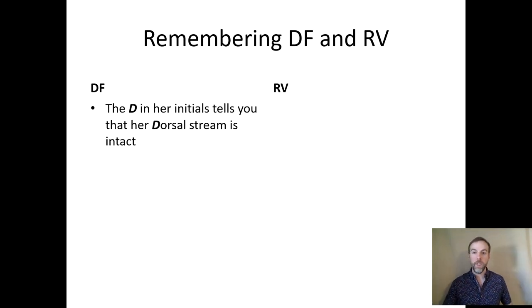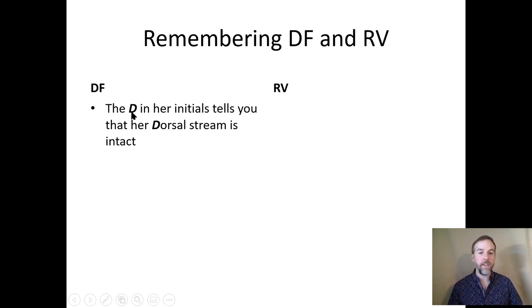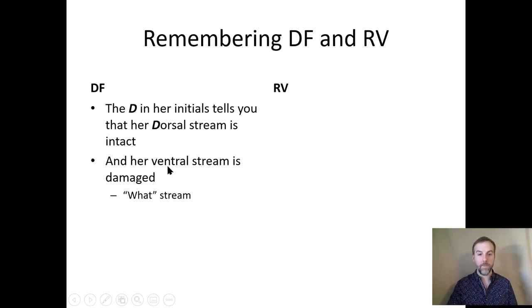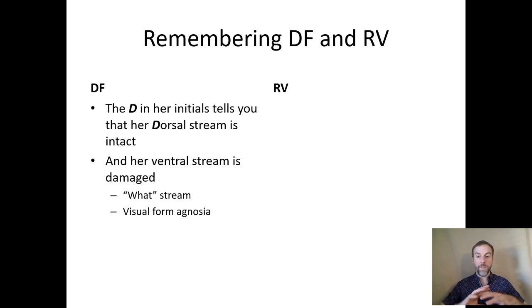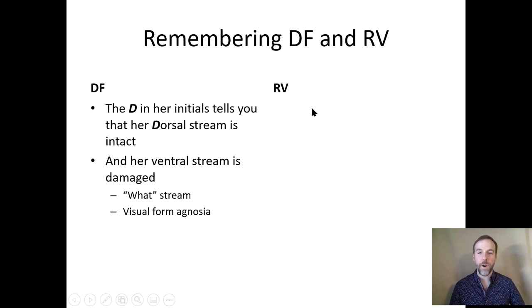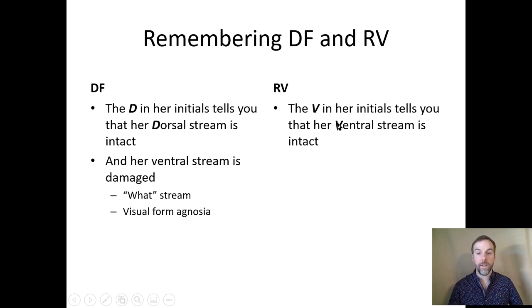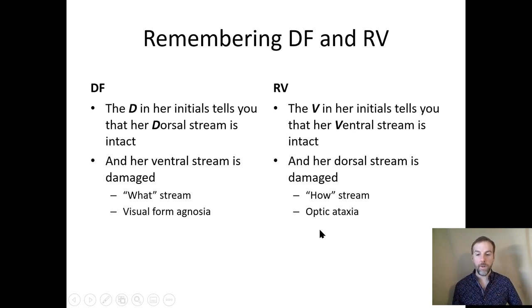A trick to remember DF and RV: DF has a D in her initials, telling you her Dorsal stream is intact. If her dorsal stream is intact, her ventral stream is damaged — that's her what stream — giving her visual form agnosia. RV has a V in her initials, telling you her Ventral stream is intact. Thus her dorsal stream is damaged — that's her how stream — giving her optic ataxia: very poor visually guided actions.